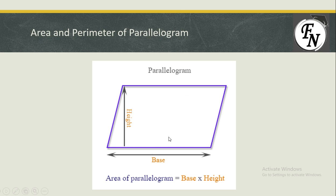The area of a parallelogram is base times height. We need to remember that the height should be perpendicular to the base — that means the base and height should make a 90 degree angle between them. To clarify this concept, I will be solving a few questions where you will understand what I mean by base and height being at 90 degrees.